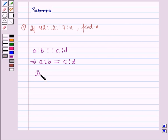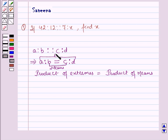Now product of extremes is equal to product of means, where these two terms are called the means and these two terms are called the extremes.